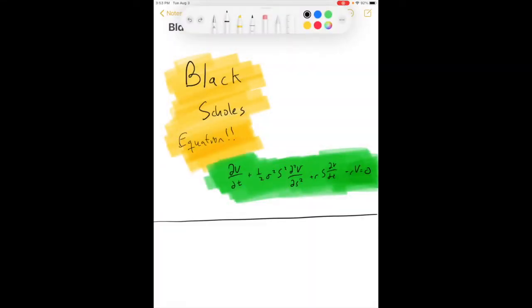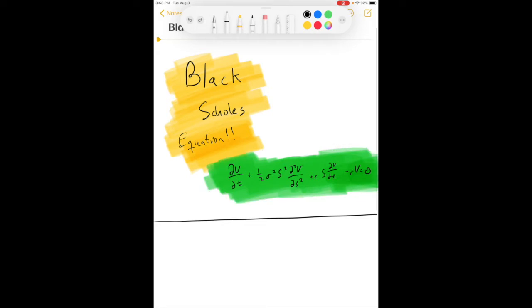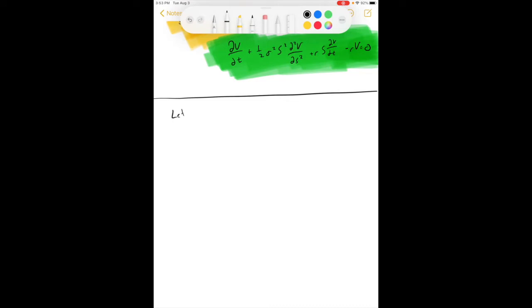All right, we're working on the iPad. We are deriving Black-Scholes equation, and as you can see right here, that is what we're aiming for. That's going to be our final product. So, we're going to start with saying, let the value of an option on a stock follow a function v of s of t and t.